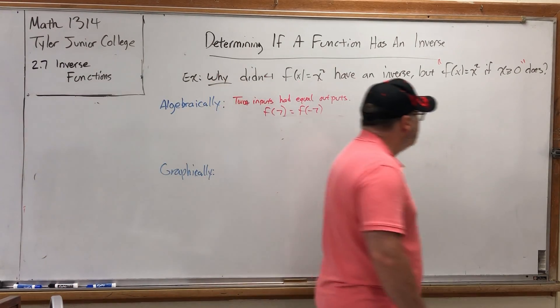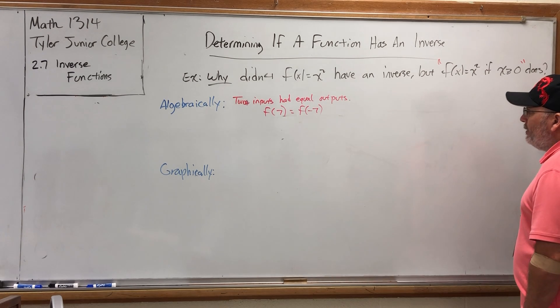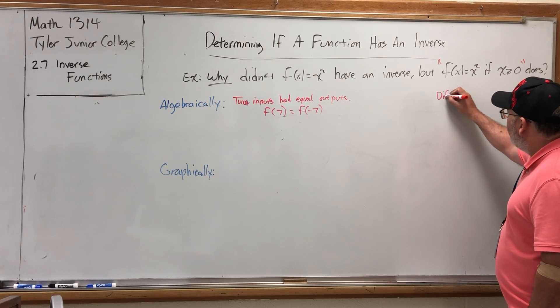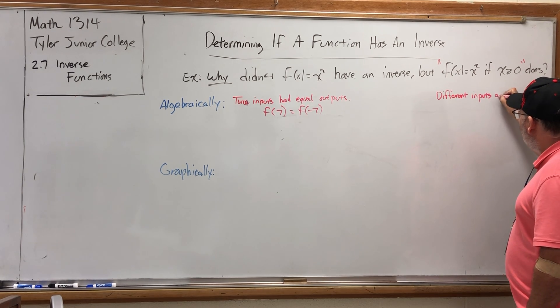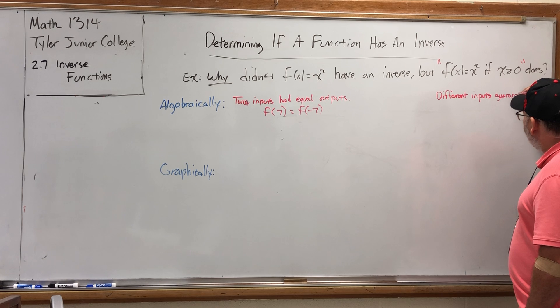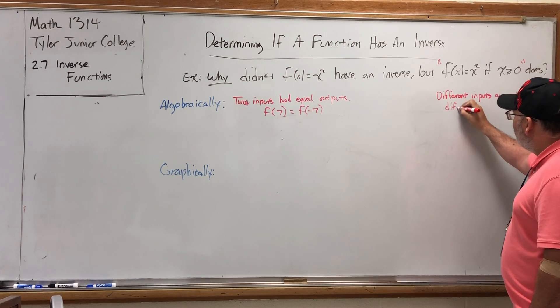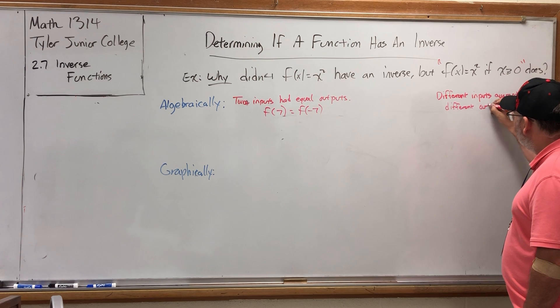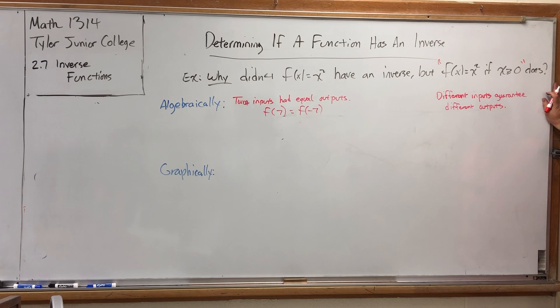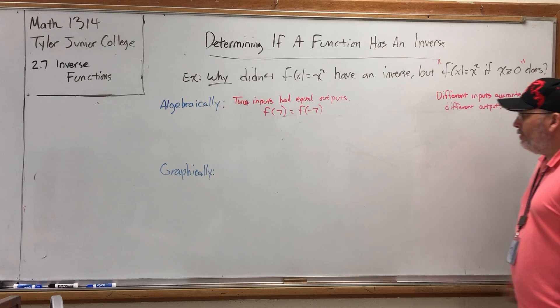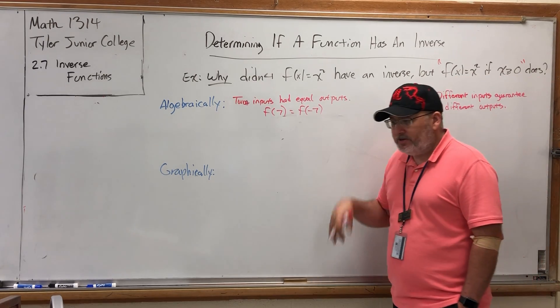That's not the case over here. Here, different inputs guarantee different outputs. Or equivalently, if your outputs match, then your inputs match. So in reverse, equal outputs guarantee equal inputs. Here, equal outputs did not guarantee equal inputs. This is a characteristic of functions known as one-to-one.